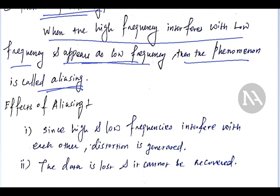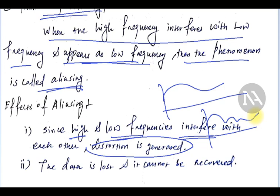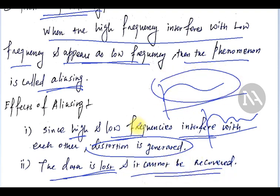What are the effects of aliasing? Since high and low frequencies interfere with each other, distortion is generated. You will not get the original continuous-time signal — you may get some distortion in the signal because there is overlapping in the frequency spectrum. Original data is lost, so you cannot properly recover the original signal from its samples. This is called aliasing, or the effect of under-sampling.